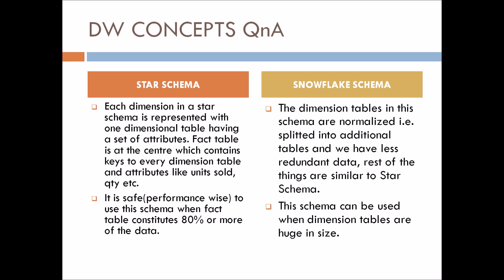In snowflake schema, the dimension tables are normalized — they are split into additional tables, resulting in less redundant data. For star schema, it is better performance-wise when the fact table constitutes 80% or more of the data. For snowflake schema, use it when dimension tables are large and can be further categorized — for example, splitting a product table into Product and Product Category tables.